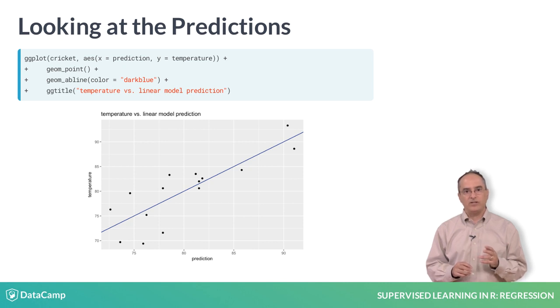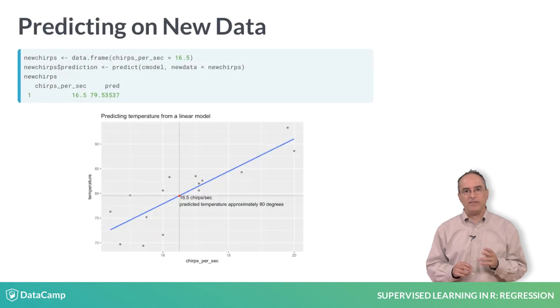In this course, we use ggplot to create most of the plots. To apply the model to new data, use the argument new data. Here we have a new data frame of cricket observations called new chirps. To apply the model to new chirps and add the predictions as a new column of the data frame.